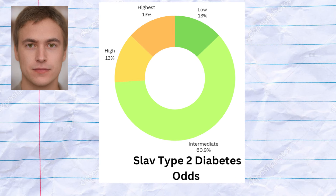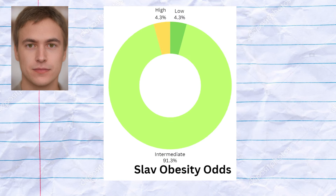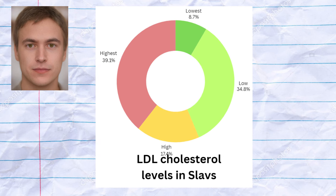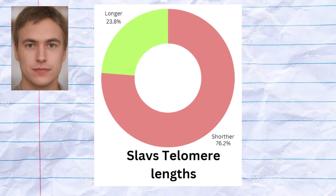Their predisposition to metabolic type 2 diabetes was rather average or typical. They also had rather average glucose levels and an average predisposition to obesity. They had a predisposition to higher levels of LDL cholesterol, which is bad, and none of them were predicted to have hemochromatosis. Most of them had lower red blood cell count and shorter telomere length, reflecting a predisposition to shorter biological lifespan.